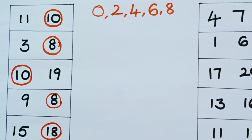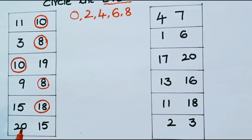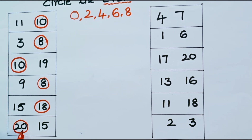Now look at the next numbers: 20 and 15. In these two, what is the even number? It is 20, because 20 is ending with 0, and 0 is an even number.